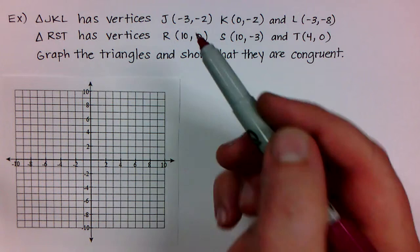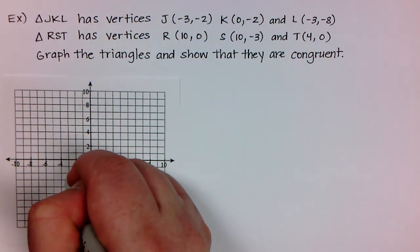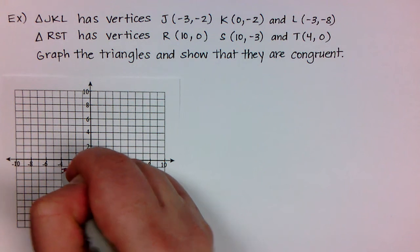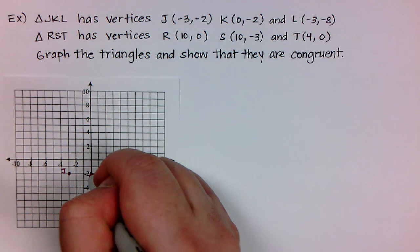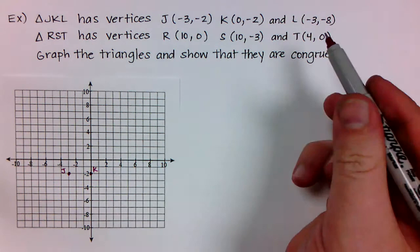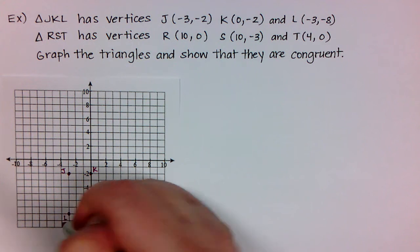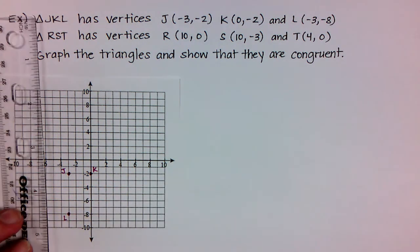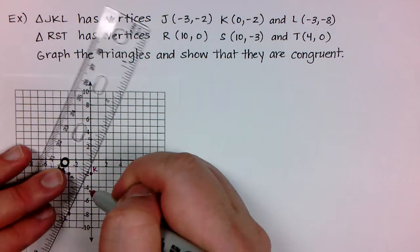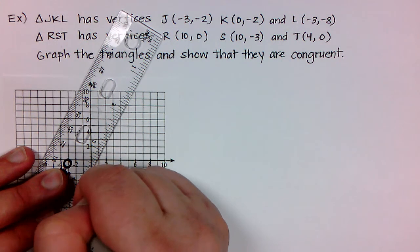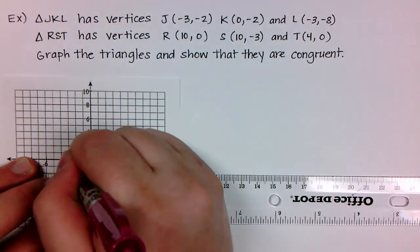Let's go ahead and graph triangle JKL. Point J is at (−3, −2), so negative 3 over and down negative 2. Point K is at (0, −2). And point L is at (−3, −8). I'm going to connect all three of these vertices to draw my triangle.